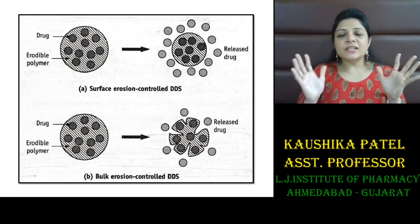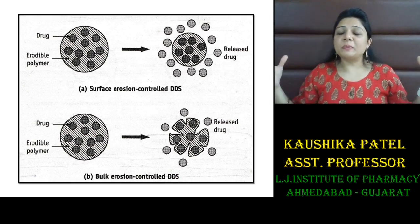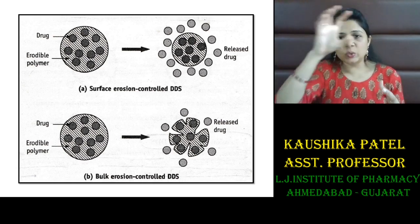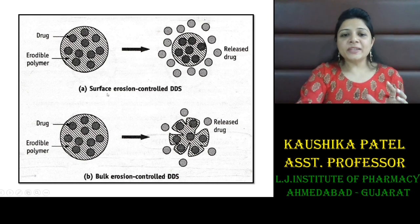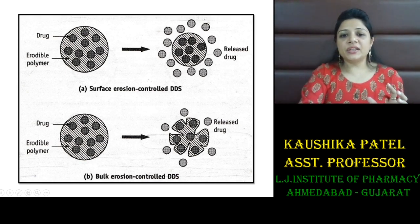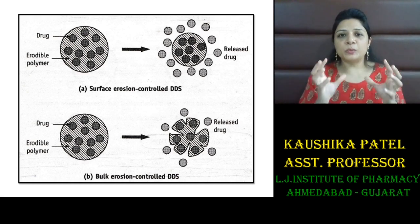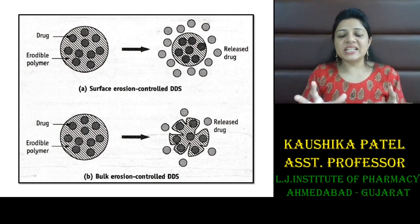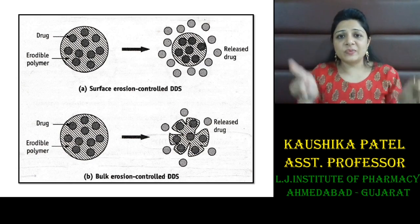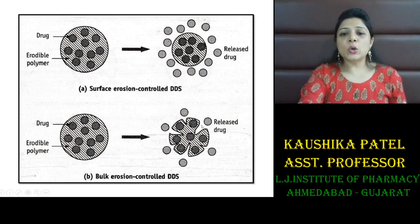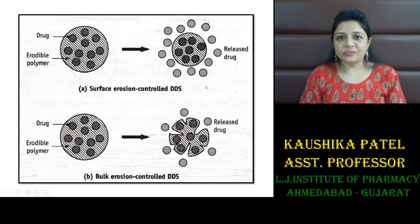Surface erosion occurs when the fluid is not able to penetrate into the center of the polymer directly, so only the surface erodes — this is a heterogeneous system. When water can penetrate into the bulk of the polymer, then it disintegrates uniformly throughout the entire system and the drug releases uniformly — that is known as bulk erosion, which is a homogeneous system.